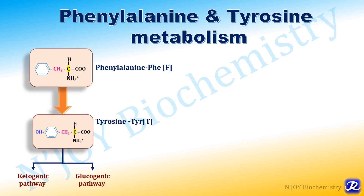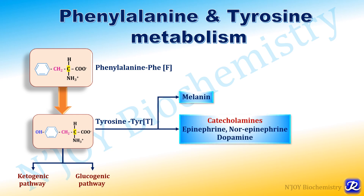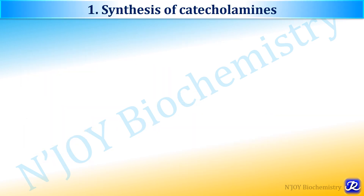Phenylalanine and tyrosine are the aromatic amino acids. Phenylalanine is an essential amino acid and is hydroxylated to form tyrosine. There are various specialized compounds derived from tyrosine, and one important one is melanin. Various catecholamines are also synthesized from tyrosine, like epinephrine, norepinephrine and dopamine.